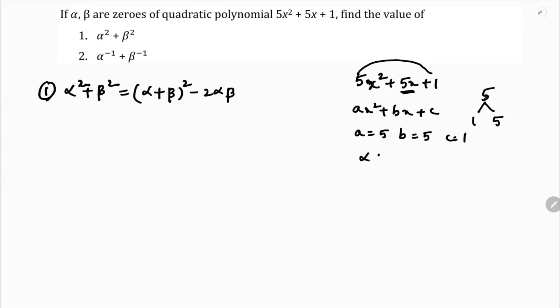I will calculate the value of alpha plus beta. Alpha plus beta is minus b by a. So minus 5 by 5, which is nothing but minus 1.